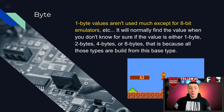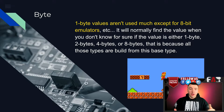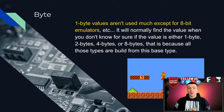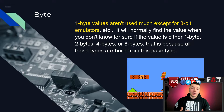The first scan type we have is 1-byte. 1-byte values aren't used much except for 8-bit emulators — for example, old games such as Mario and Atari-styled games. However, if you know the value that you want to scan for is a whole number, you can use this type of scan to help you find it if you don't know exactly what kind of data type it is.